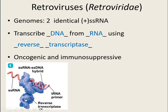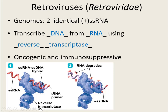In their genetic material they have two identical strands of positive-sense single-stranded RNA, and they can transcribe or make DNA from RNA using reverse transcriptase. The enzyme takes the single-stranded RNA and starts laying down a copy, but instead of bringing in RNA nucleotides it brings in DNA nucleotides — A's, T's, C's, and G's — producing a DNA strand.